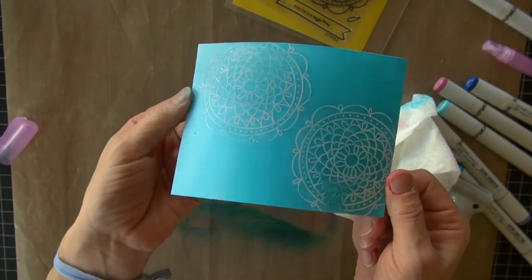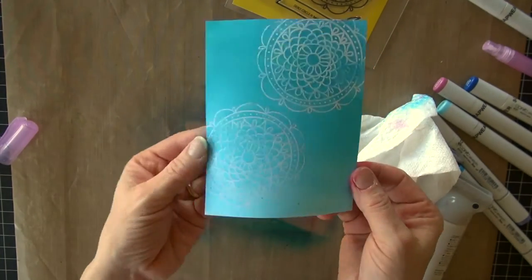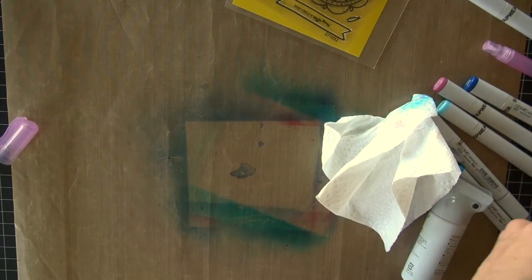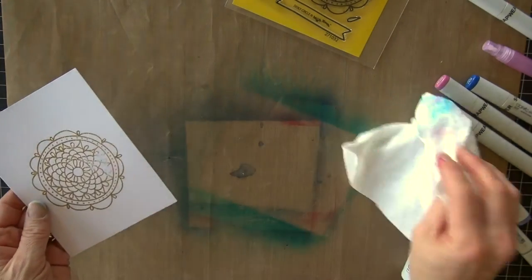And it even has a little bit of shimmer to it, so this will be really fun to add as a background to a card, or even as a card with just a sentiment. I can do the same thing on the gold. I have another clear, but I want to show you one other technique.